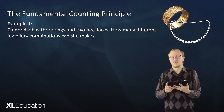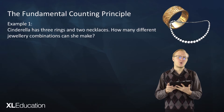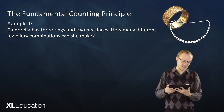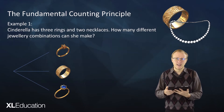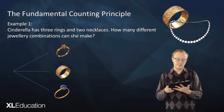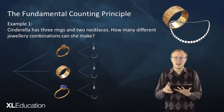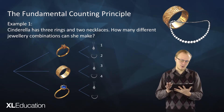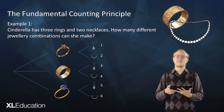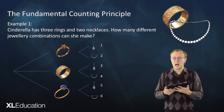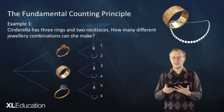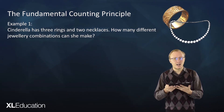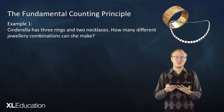In the past you would have solved this by drawing a tree diagram. You would have said she's got three rings and each ring can be paired with two different necklaces, and then you would have counted: one, two, three, four, five, six — six different ways in which you can combine the rings and the necklaces.